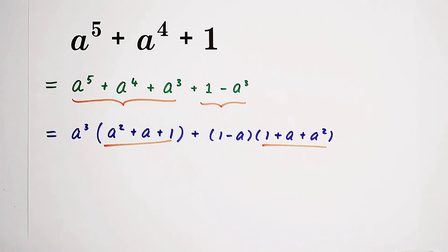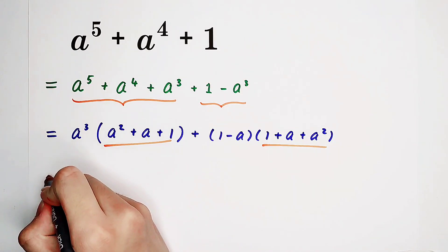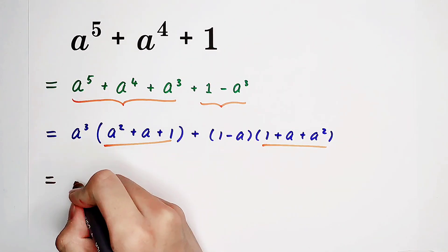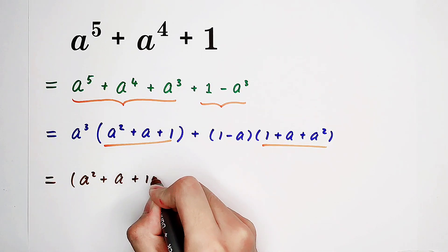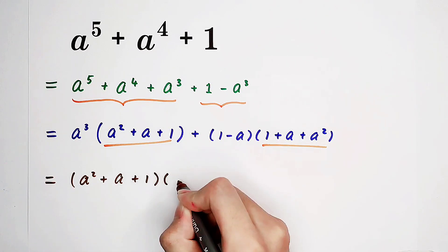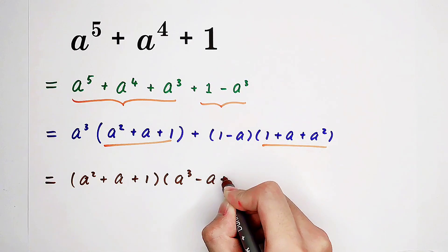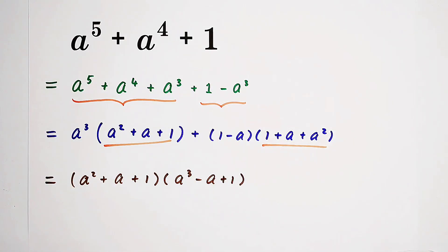Although they are not in the same order. So it is a squared plus a plus 1, this one can be taken out, times a cubed minus a plus 1. And this is our answer.